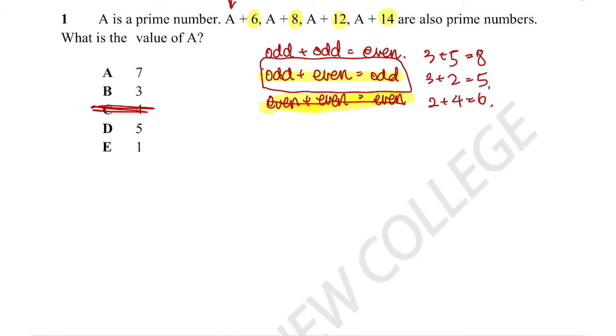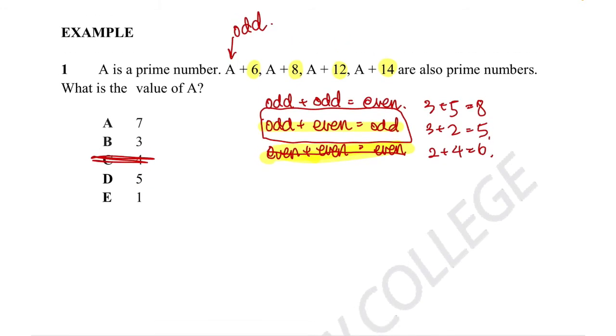Looking at the answer options, we can immediately cross out C. Now we're left with 1, 5, 3, and 7. Another thing to consider: the bigger your numbers get, the less likely they are to be prime, simply because there are more chances of divisibility. Between 1 to 10, you've got primes 2, 3, 5, 7. I would test lower numbers first, but let's see how this works out.